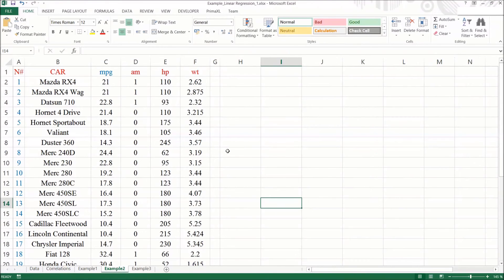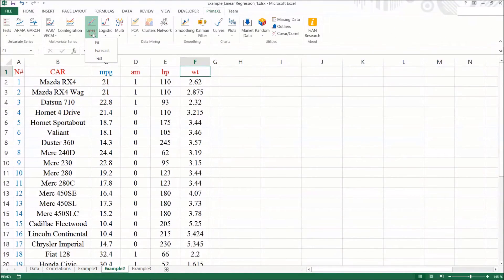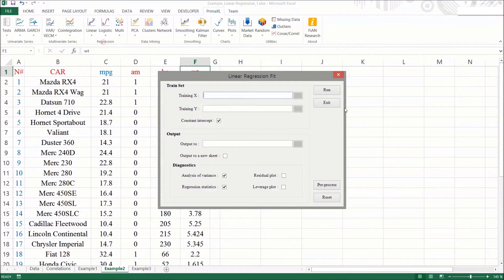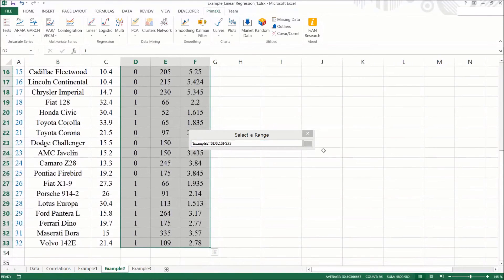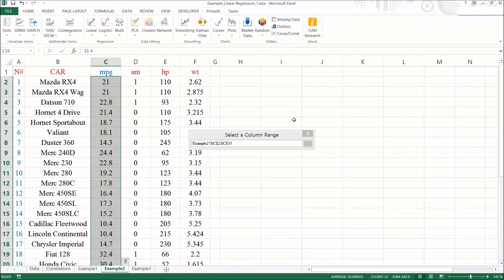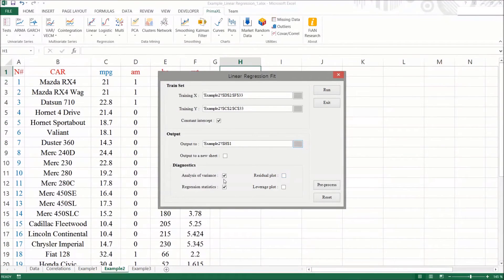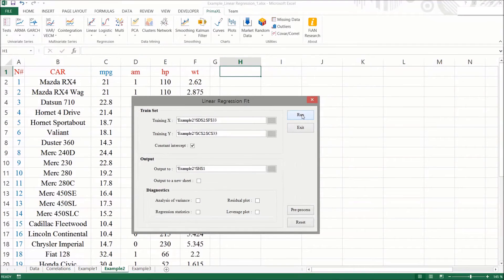Again, we have a simplified data table with only the columns that we're going to use. We go to the PrimExcel tab, select Linear, and then Fit. As before, we select the set ranges for X and Y. Then, we specify the output location. Again, we leave these boxes unchecked. Now, we press the Run button to execute.